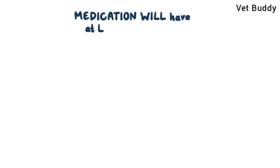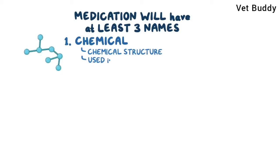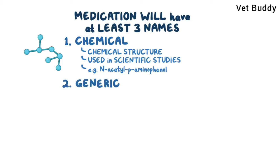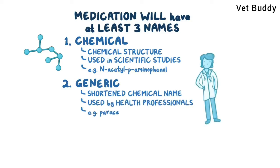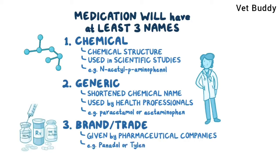This medication will have at least three names: a chemical one, describing its chemical structure and used mostly in scientific studies, like N-acetyl-P-aminophenol; a generic name, which is usually a shortened version of the chemical name and is mostly used by health professionals, such as paracetamol or acetaminophen; and one or more brand or trade names given by pharmaceutical companies, such as Panadol or Tylenol.